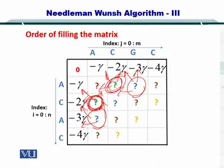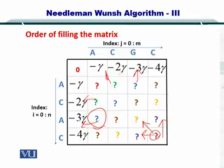And this continues until you reach the last position for which you require this element, this element and this element. So the entire matrix is filled. And now you are ready to select the most optimal alignment.